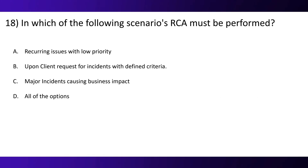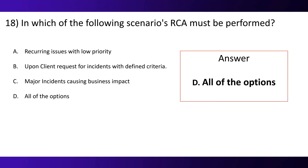Question 18. In which of the following scenarios must RCA be performed? Option A, recurring issue with low priority. Option B, upon client request for incident with defined criteria. Option C, major incidents causing business impact. Option D, all of the options. And the correct option is D — all of the options.